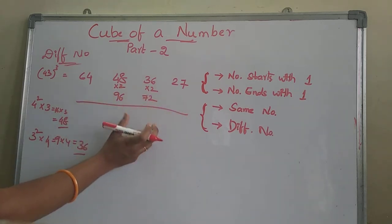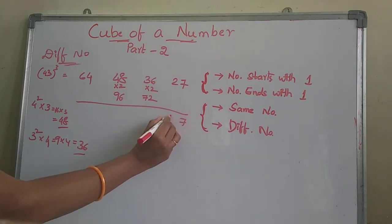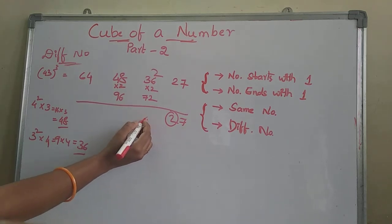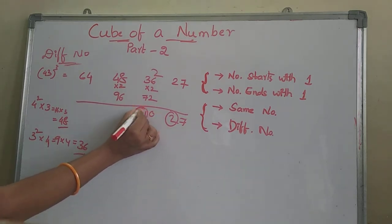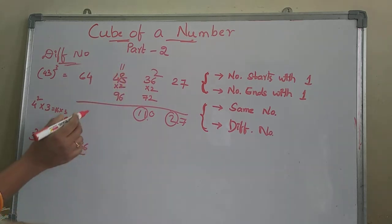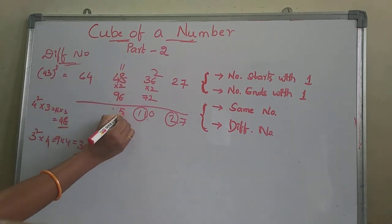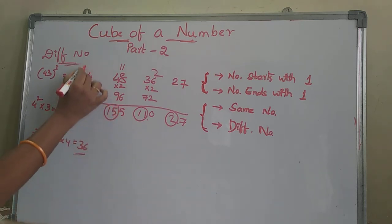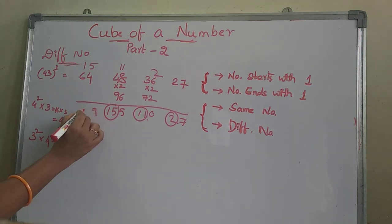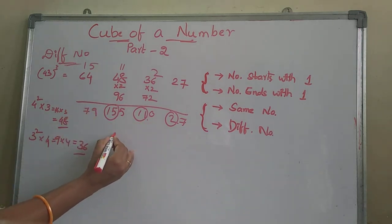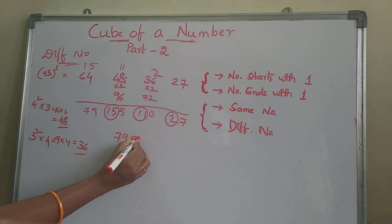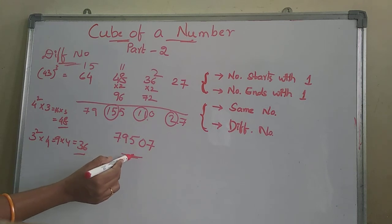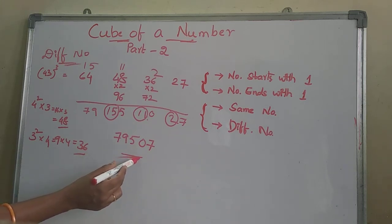After that, we add all these. 2, 7 — take 2 as a carry. This gives 0, 1, 1, 1 — take 11 as a carry. Then 5, 1 — take this as a carry. 9, 7. The remaining numbers are 7, 9, 5, 0, 7. So 43 cube is 79507.